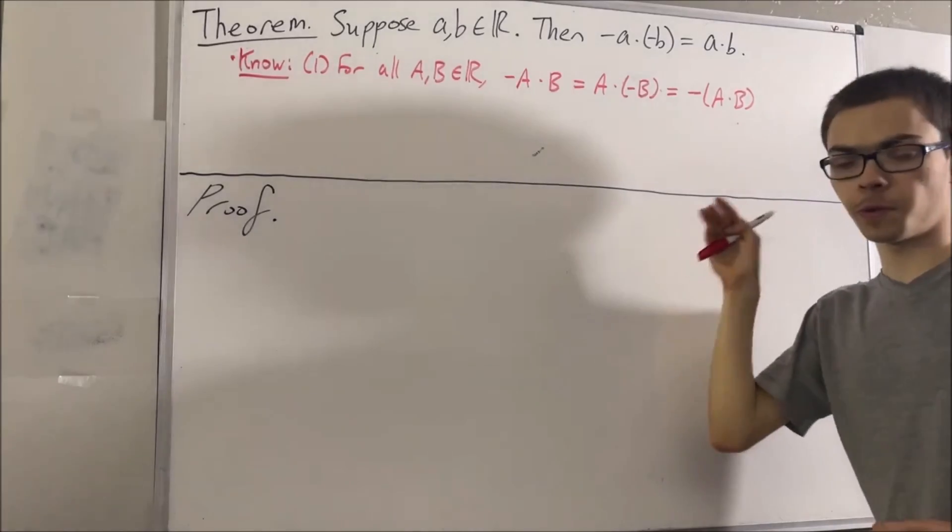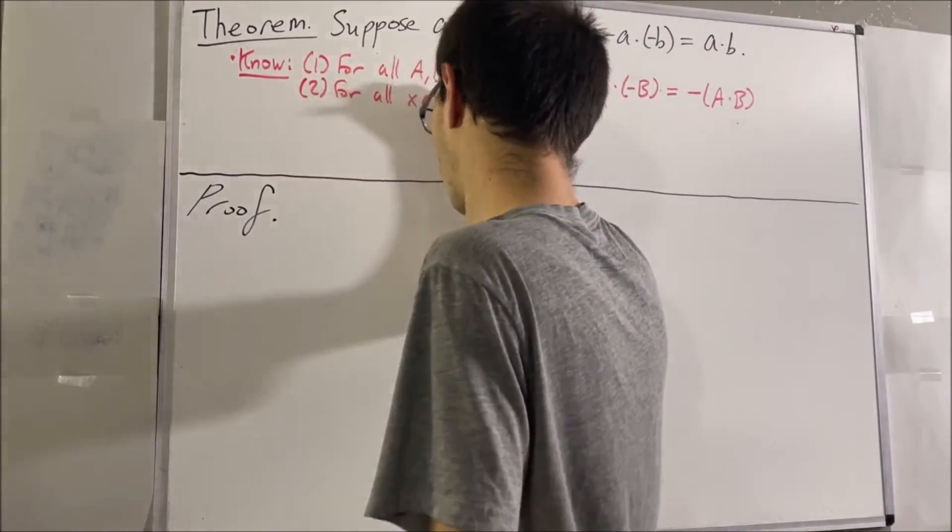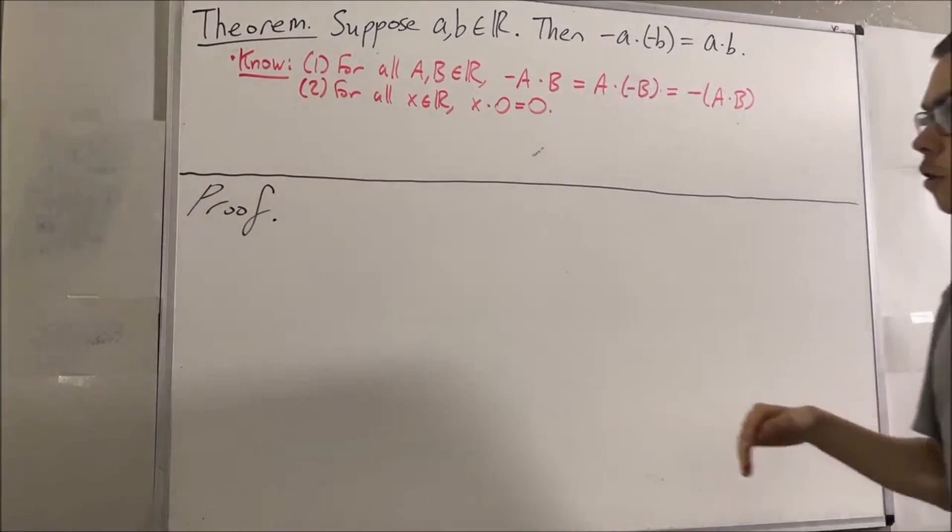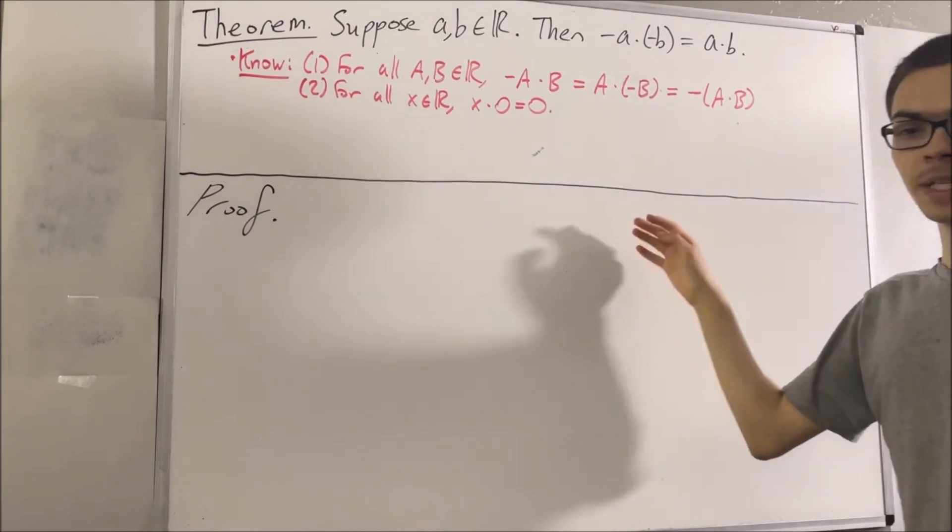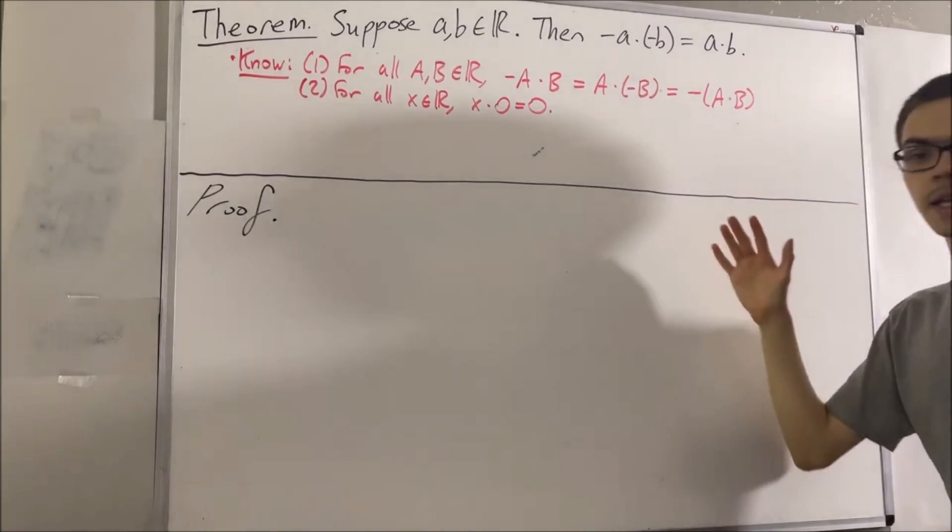The second property is that for every real number X, X times 0 is equal to 0. The third property is the cancellation law of addition. For every three real numbers A, B, and C, if A plus C is equal to B plus C, then A is equal to B.